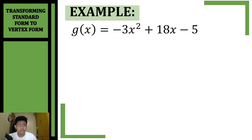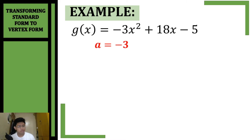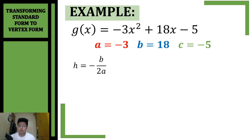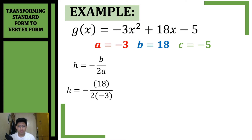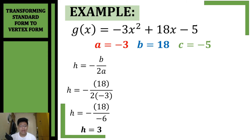Let's have another example. We're going to transform this standard form to vertex form. First, we get the values of a, b, and c: a is negative 3, b is 18, and c is negative 5. Using the formula negative b over 2a to get the x-coordinate: substituting, we get negative 18 over 2 times negative 3, simplifying to negative 18 over negative 6, so h is equal to 3.